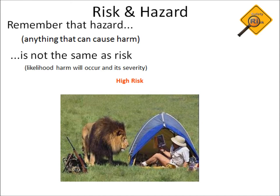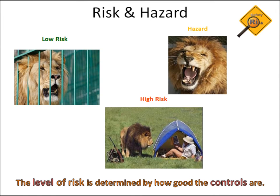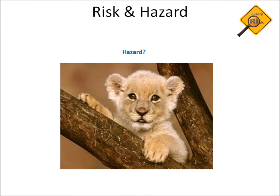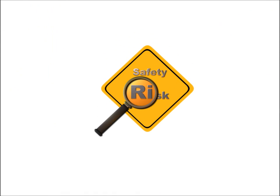Conversely, a hunter remote from his rifle would be exposed to a high risk when a lion appears. This implies that for a given hazard, the level of risk is determined by how good the controls are. A lion cub is also deemed to be a lion — so why are we not at risk when exposed to a lion cub? The answer is that the level of risk is determined by both the magnitude of the energy as well as how good the controls are.